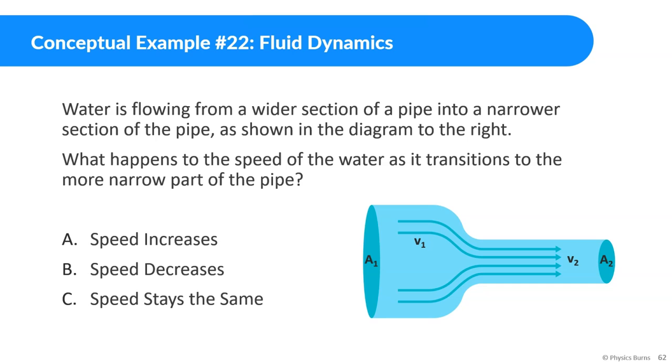So let's look at this conceptual example number 22. Water is flowing from a wider section of a pipe into a narrower section of the pipe, as shown in the diagram to the right. What happens to the speed of the water as it transitions to the more narrow part of the pipe? Always pause it. It's really good to just think for yourself, even if you're wrong a lot of the times. But we just talked about this, the speed should be increasing.